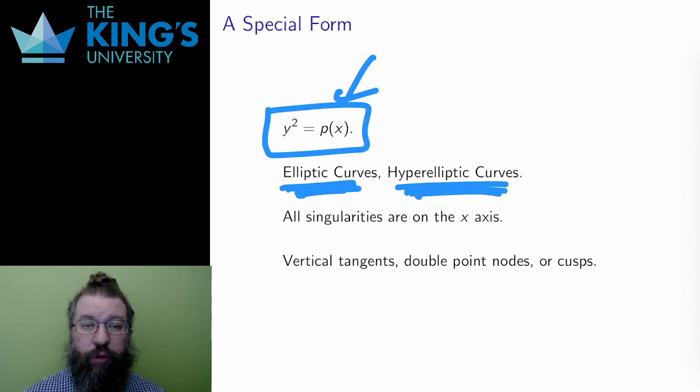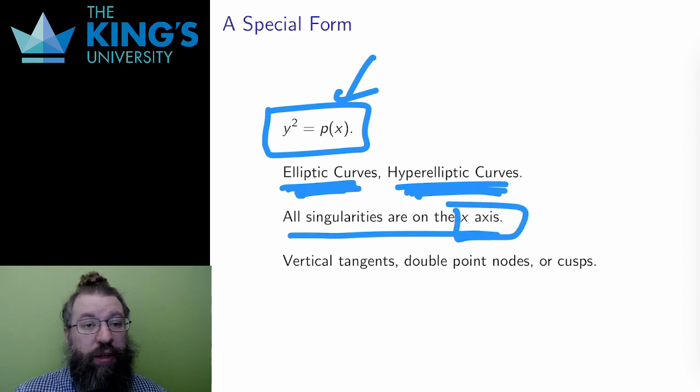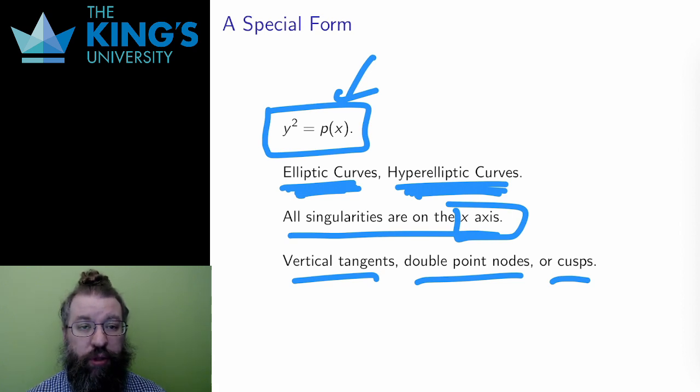There are a number of advantages of working with this form. First, all the singularities are going to fall on the x-axis, which makes them a bit easier to find and understand. Secondly, I can expect the singularities to be either vertical tangents, double point nodes, or cusps. There are a few other possibilities, even with this restricted form, but all the curves that we will work with this week will only have these three possibilities.